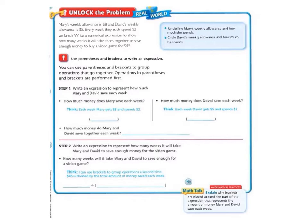Mary's weekly allowance is $8 and David's weekly allowance is $5. Every week they each spend $2 on lunch. Write a numerical expression to show how many weeks it will take them together to save enough money to buy a video game for $45. Let's look at the blue box so we get some clues about how to solve this problem.